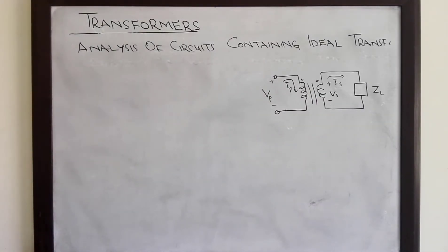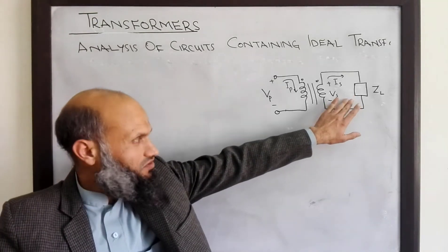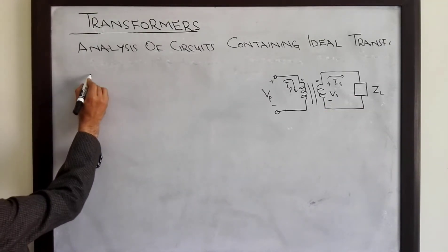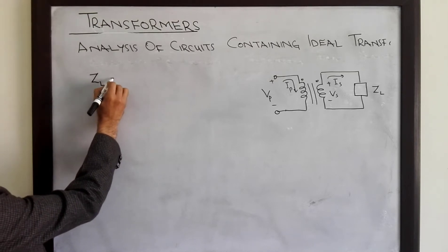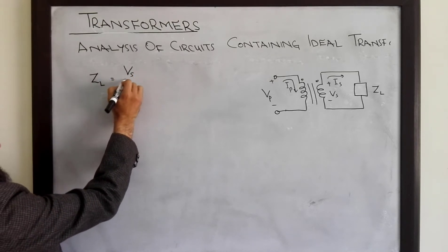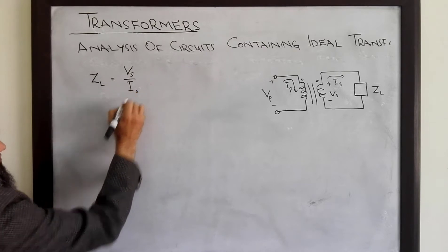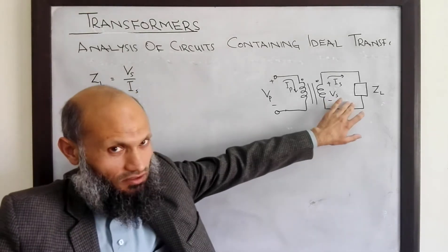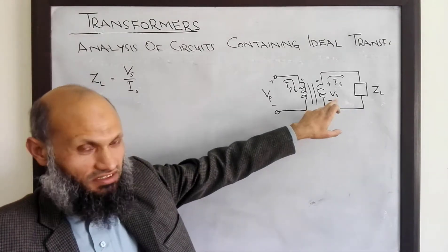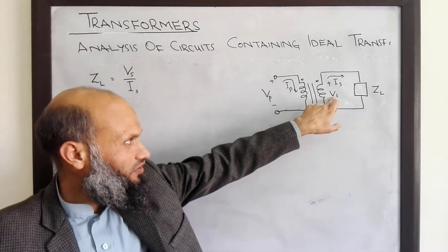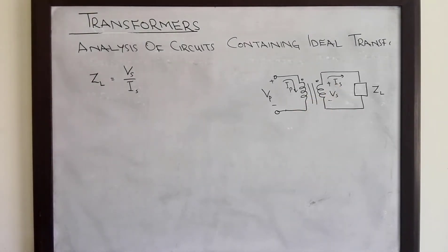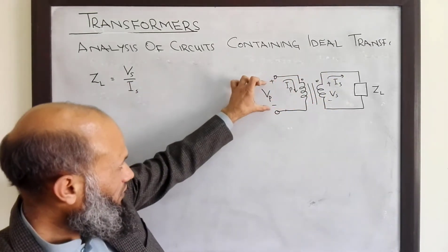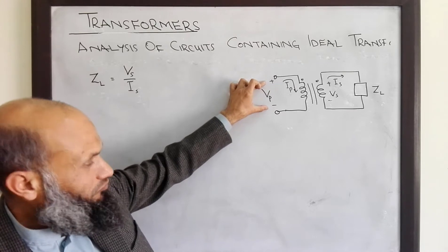Here we have a load connected to the secondary winding. We know that ZL is equal to Vs over Is. A load ZL is connected and this load equals the ratio of the phasors Vs and Is. However, this load when seen from the primary side will appear differently.